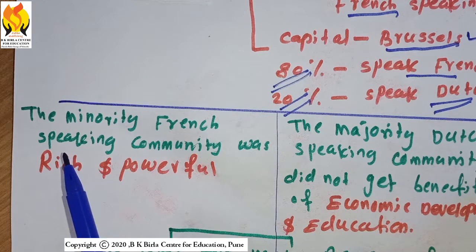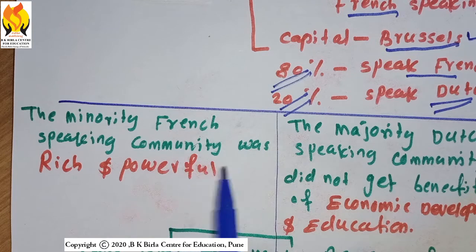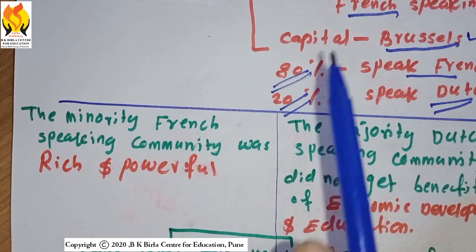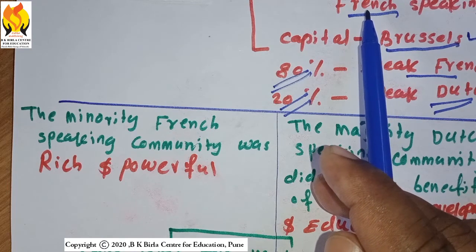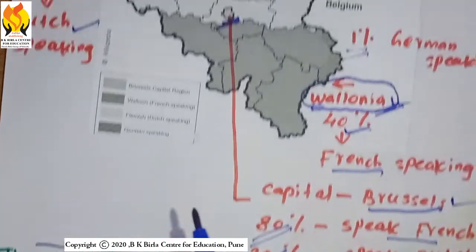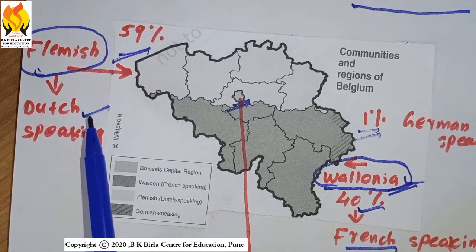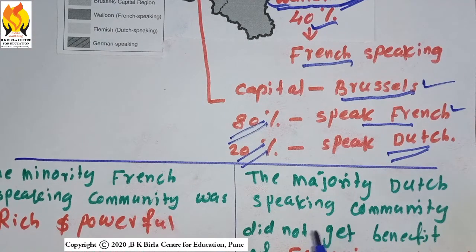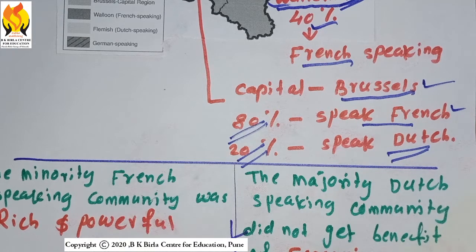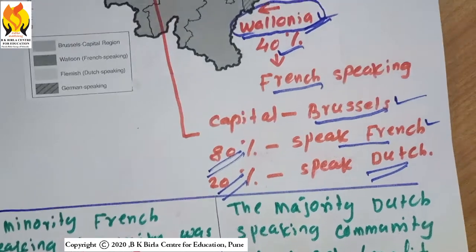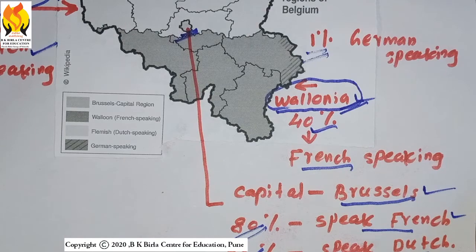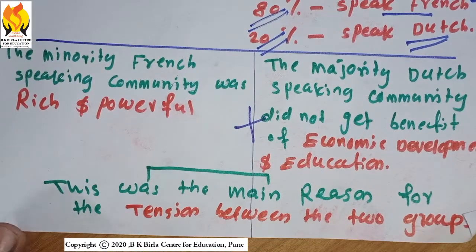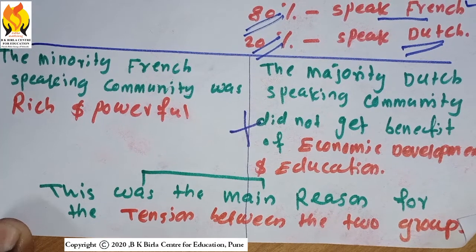The minority French-speaking community was rich and powerful — politically very powerful — whereas the majority Dutch-speaking people were not rich and powerful. The majority Dutch-speaking community did not get the benefits of education and economic development. This issue created a conflict between the Dutch and French communities in Belgium, and this was the main reason for the tension between the two groups.